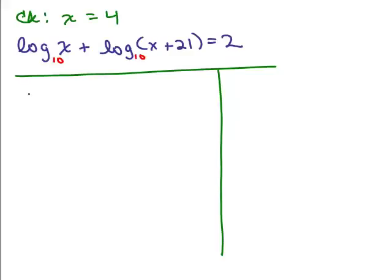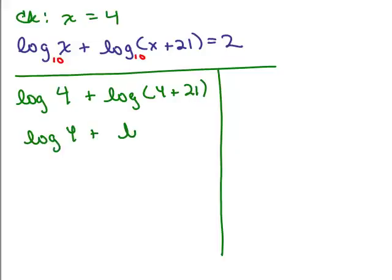So let's plug in 4 for x. We have the log of 4 plus the log of 4 plus 21. So that's the log of 4 plus the log of 25. Now there's two ways you can go from here. You could use your calculator and put in the log of 4 plus the log of 25 and add it together and you should get the number 2 if you're careful. But if not, you could use your property of logs and you have the log of, remember what this means, you'd multiply 4 times 25.